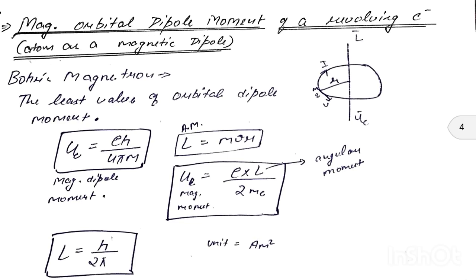Next: magnetic orbital dipole moment of a revolving electron. The key definition here is Bohr magneton: the least value of orbital dipole moment is known as Bohr magneton. The formula is: magnetic dipole moment = eℏ / 4πm, where e is the electron's charge, h is Planck's constant, and m is the mass of the electron.